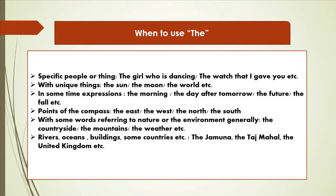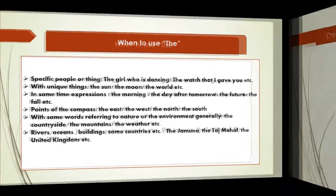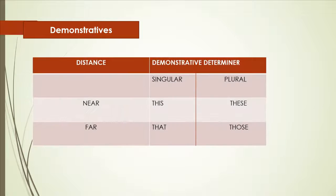Now we will see demonstratives. Demonstratives are used to state the distance of what the speaker is referring. They tell us whether an object is close to you or far away. Here I have made a table so that you can see that where to use for singular words, you are going to use which determiners.